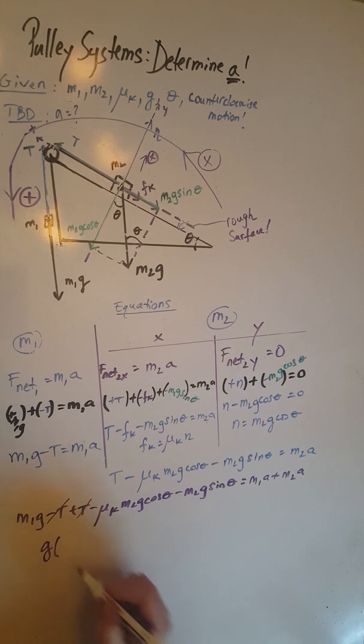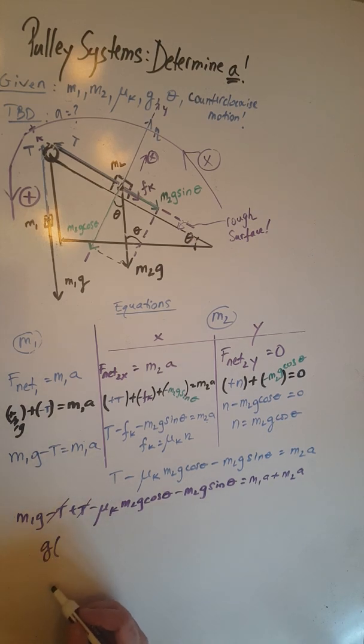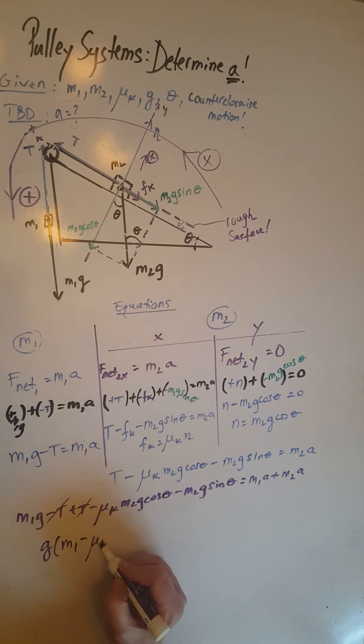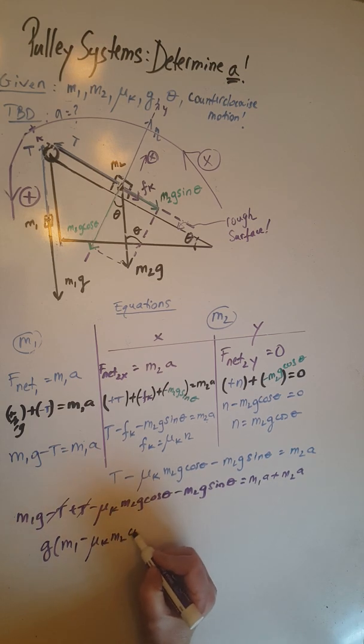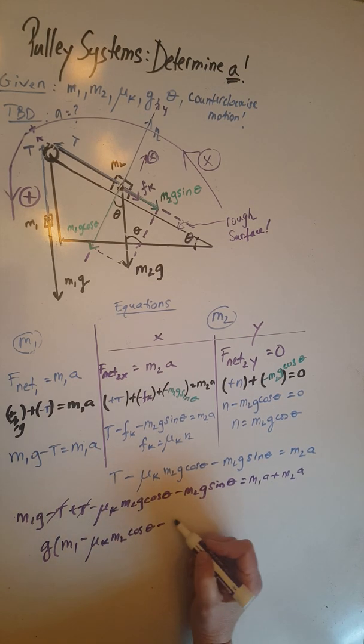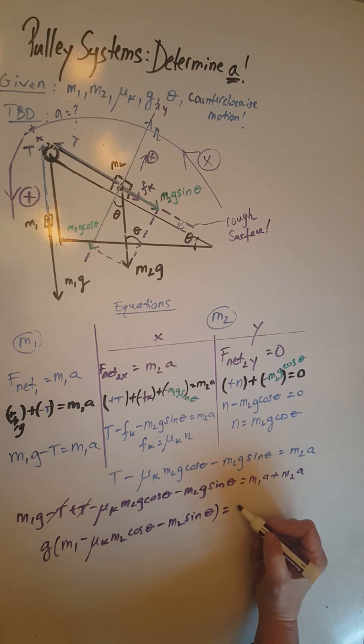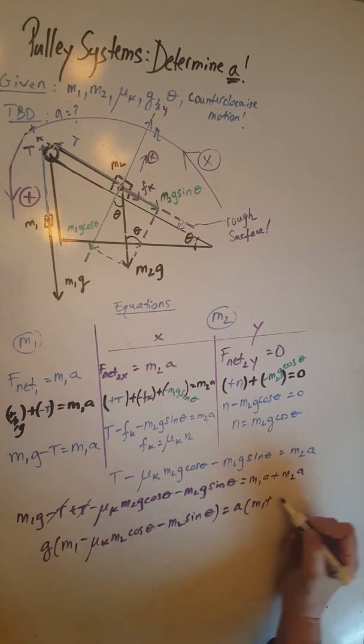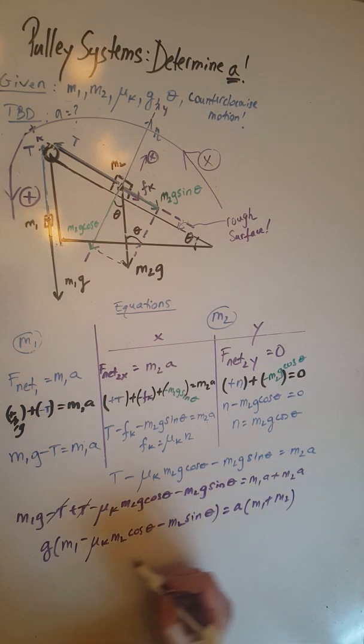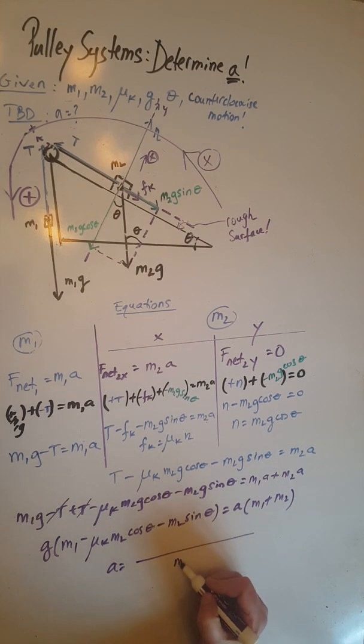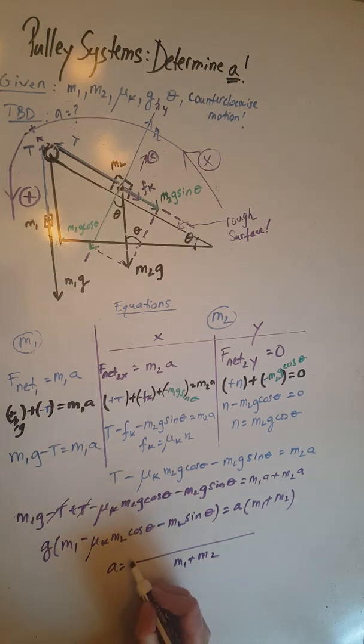On the left hand side, we can now cancel out the tensions and factor out a g. When we do that, we are going to have g open parenthesis m1 minus mu k m2 cosine theta minus m2 sine theta equals on the right hand side we factor out an a, a times m1 plus m2.